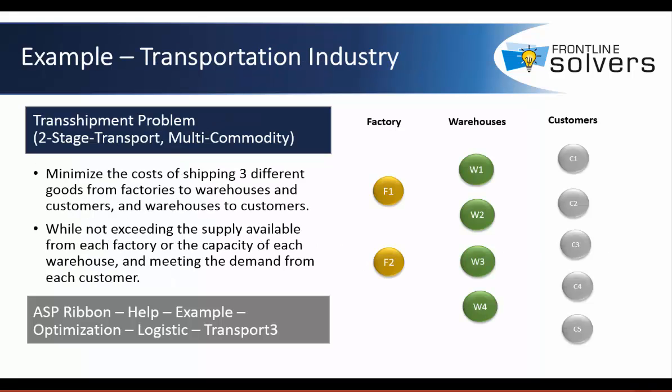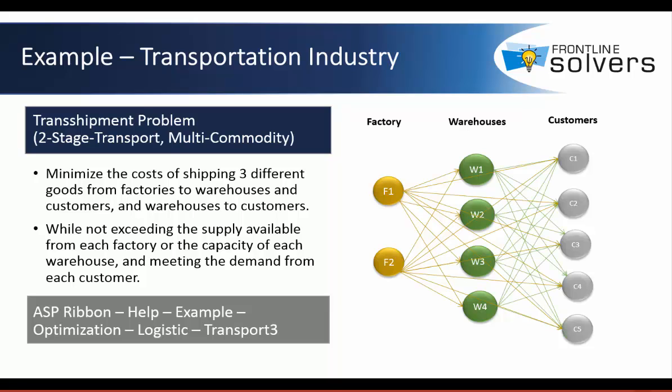Now it is time to dive in and see how we can solve a problem in practice. Transportation and logistics operations of your company can be a competitive differentiator. In this example, optimization is used to optimize a transportation operation. A company has three different goods that have to be shipped from two factories to four warehouses, and from four warehouses to five customers, or directly from factories to customers with minimum cost. In this diagram, gold color arrows show potential flows from factories to warehouses and customers, and green arrows show potential flows from warehouses to customers.